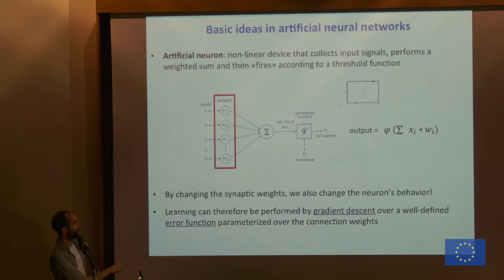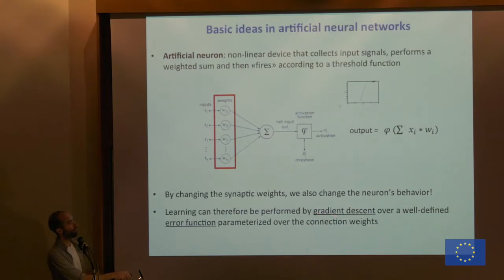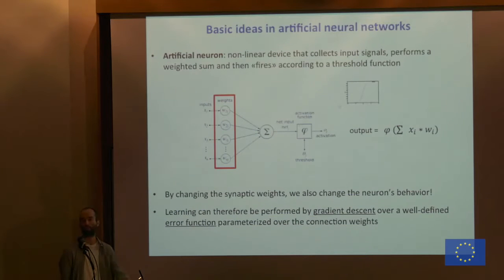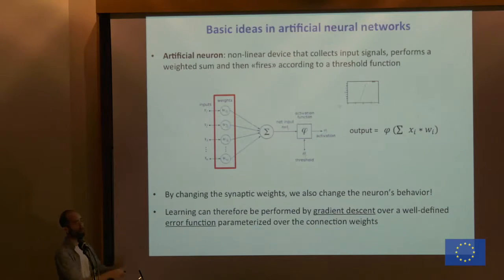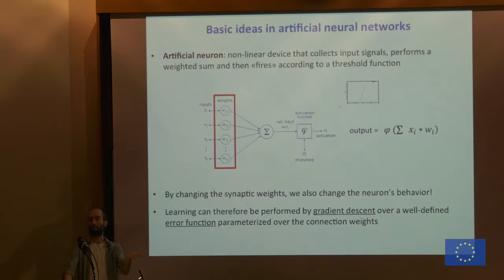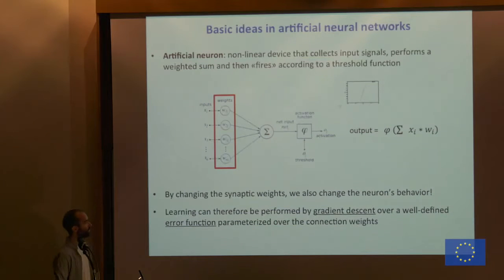Learning is the change of the connection weights. We can perform learning by gradient descent — we define an error function parameterized by the connection weights and then try to minimize it. For example, if the neuron must predict zero or one and it predicts one when the target was zero, that's an error. So we change the connection weights in such a way that next time it gives the correct answer. Gradient descent is a powerful optimization technique to change these weights accordingly.